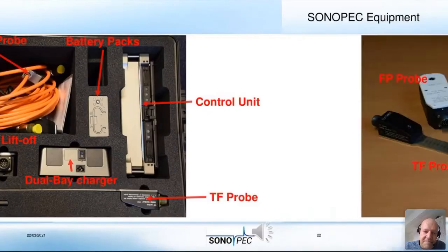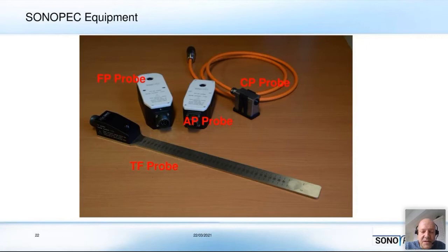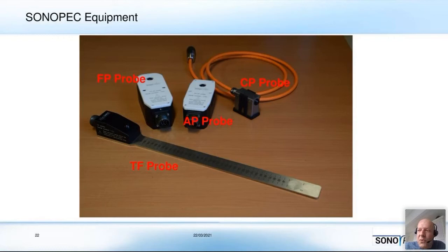We have mainly four probes. The tank floor probe is coded as TF probe. The FP probe is the stronger probe, going up to 200–250 millimeters insulation, with wall thickness up to 70 millimeters. The AP probe has a smaller application range — insulation up to 75–80 millimeters and wall thickness up to 30 millimeters. The contact probe and tank floor probe have wall thickness and standoff up to one inch, or 25 millimeters. For example, a pipe with thick bitumen coatings can be easily inspected with the contact probe.